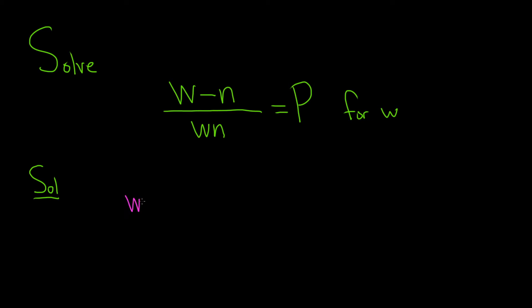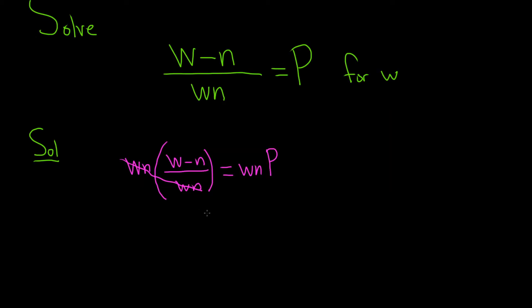So WN times — we have W minus N over WN equals WN times P. Now these go away, so we have W minus N is equal to WNP.